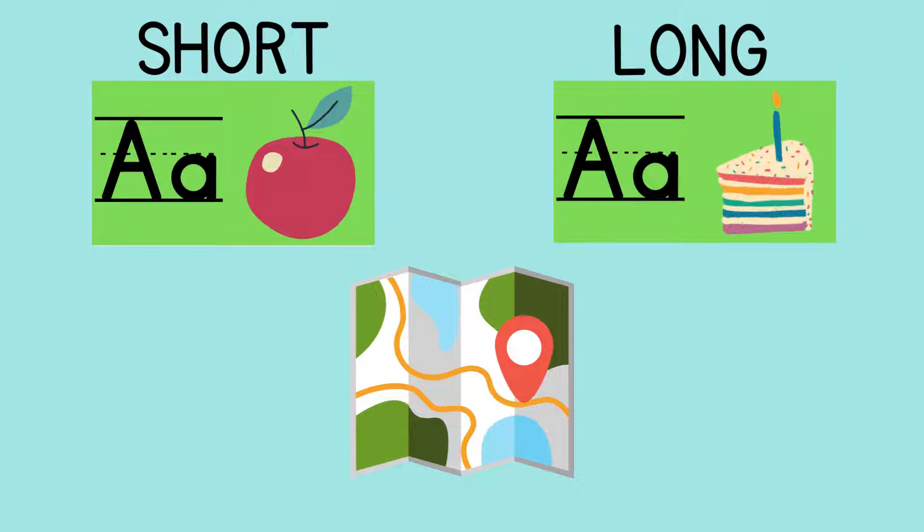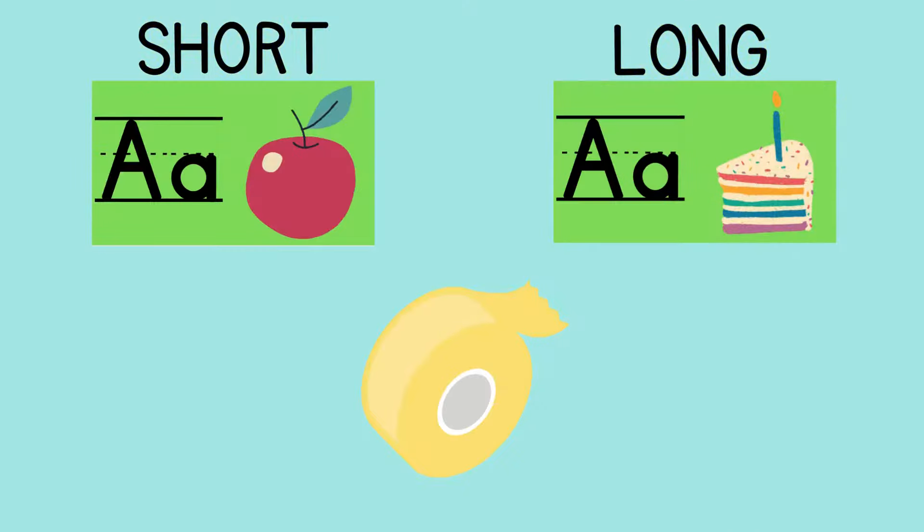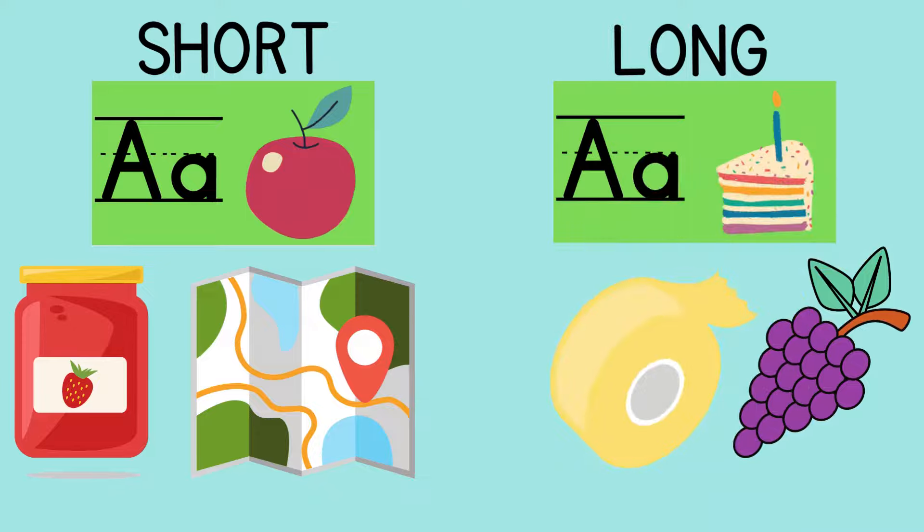Map - what do you hear? Short or long A? Map, that one is short A. Tape - short A or long A? Tape, that one is long A.